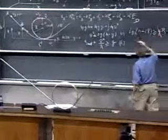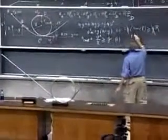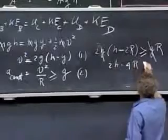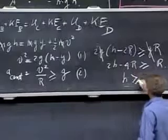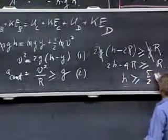I lose my g, so 2h minus 4r must be larger or equal to r, 2h must be larger or equal to 2 and a half r.